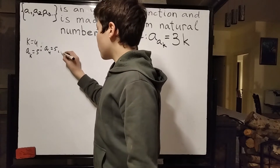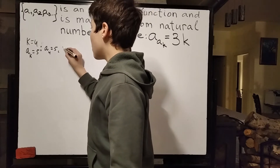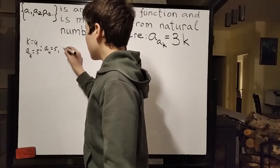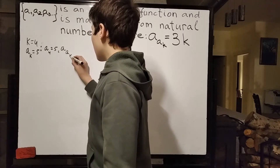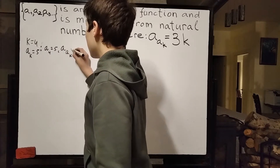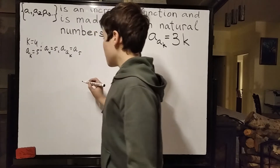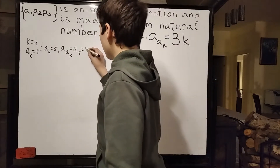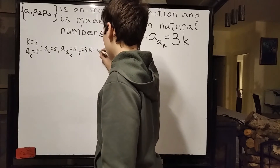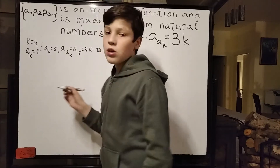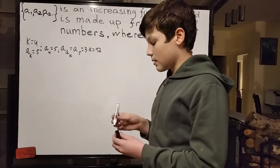But we also get, by this rule, that a of a of k — so a of a of k — and a of k is equal to 5, meaning that this is equal to a of 5, which is equal to 3 times k, which is 3 times 4, which is 12. So that's just an example in case this rule wasn't clear.